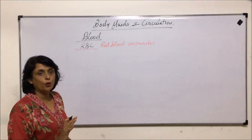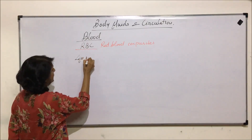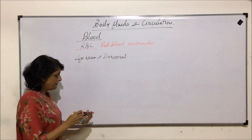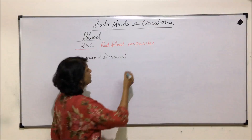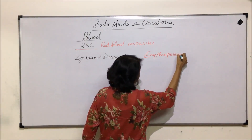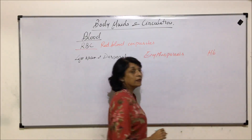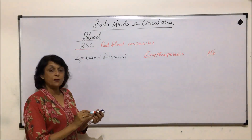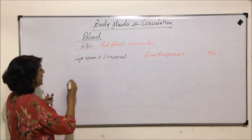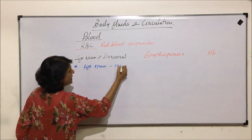We have to discuss three more points in RBCs. One is lifespan and disposal, then we will take up the conditions required for erythropoiesis, and in the end we will talk about hemoglobin — the red pigment present in RBCs. We have just now talked about the lifespan: RBCs' lifespan is 120 days.